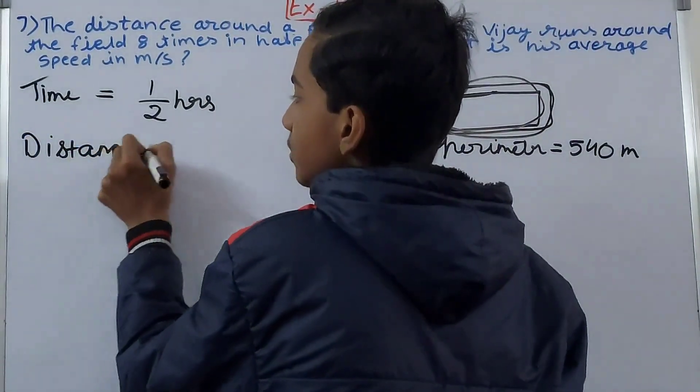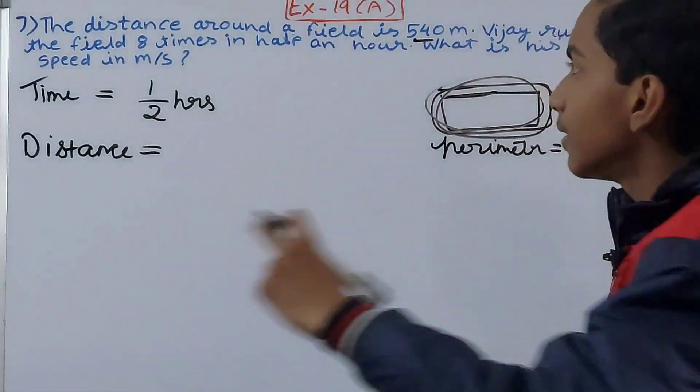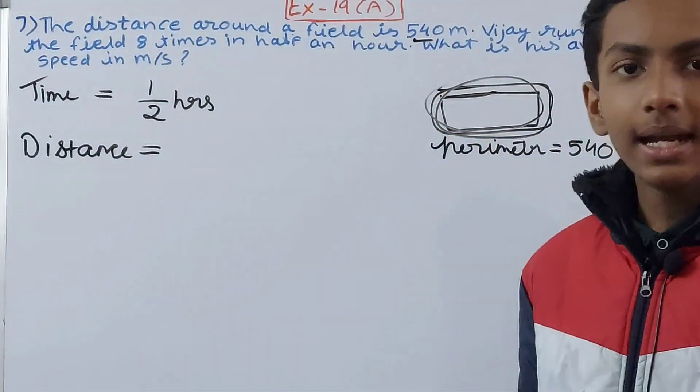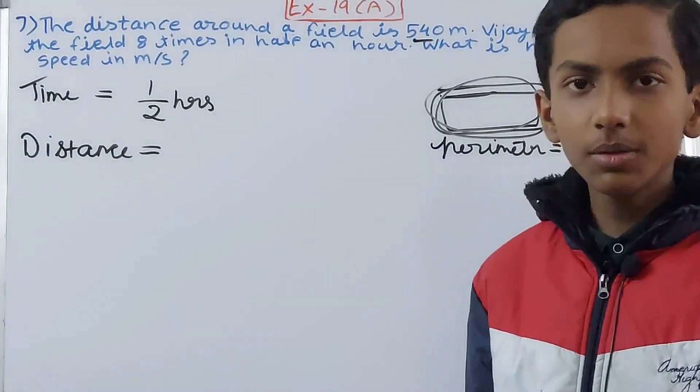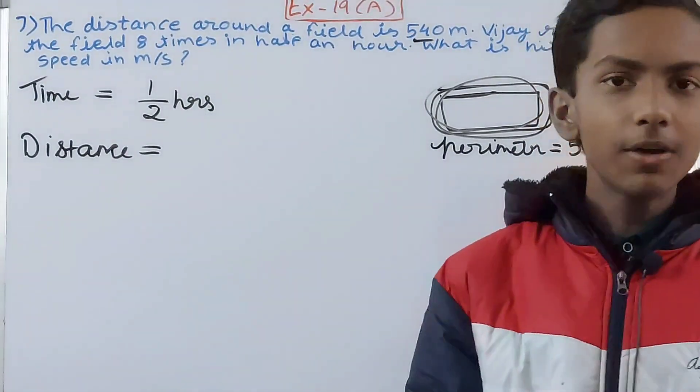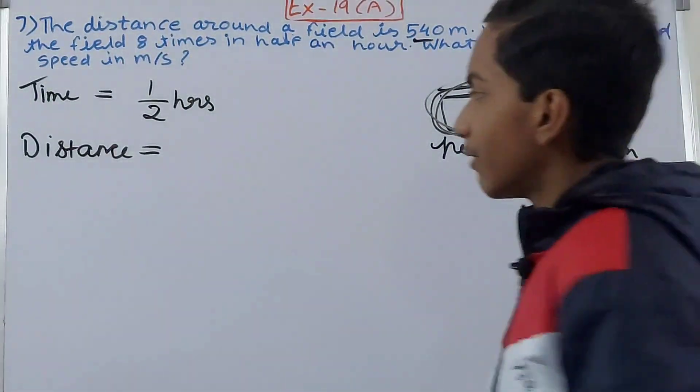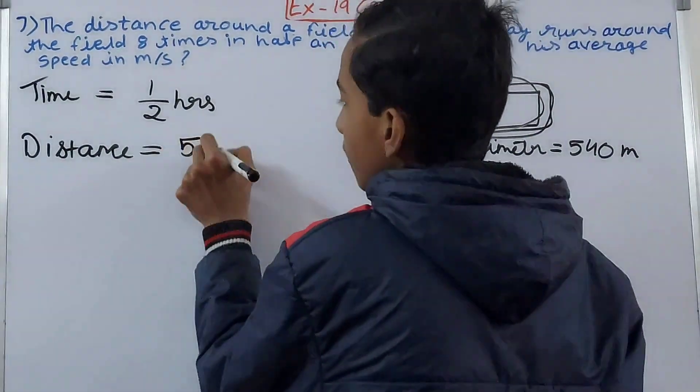The distance becomes: he went around the field 8 times, and going around the field, the perimeter of the field is 540 meters. So multiply 540 by 8 - that will be the distance. So 540 into 8.